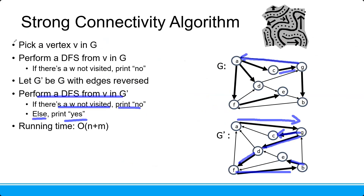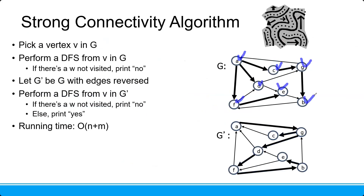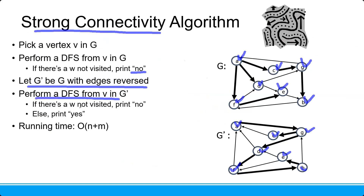So if all vertices have been visited in G, and if all vertices have been visited in G prime, then it is strongly connected. If there is a 'no' at either step, then it is not strongly connected.